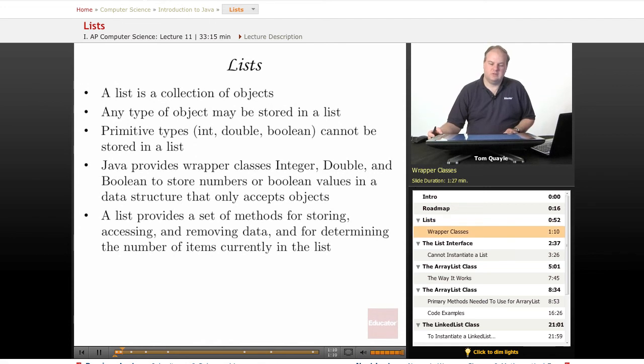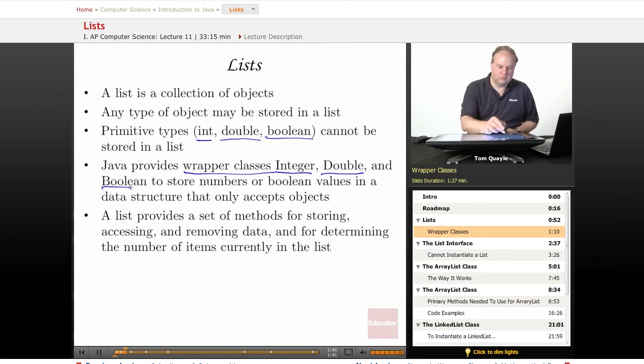If you need to store a list of integers, doubles, or booleans, or any of the other primitive types, Java provides what's known as wrapper classes. The wrapper classes have a name similar to the name of the primitive type. So the wrapper class for an int is Integer with a capital I, wrapper class for double is Double with a capital D, and the wrapper class for boolean is Boolean with a capital B.